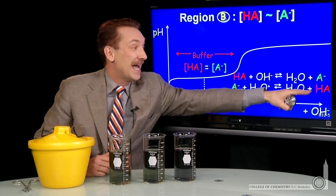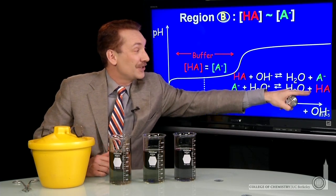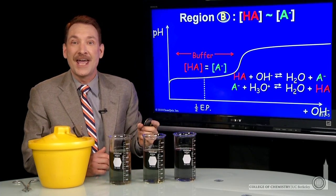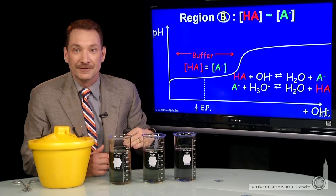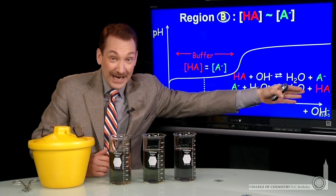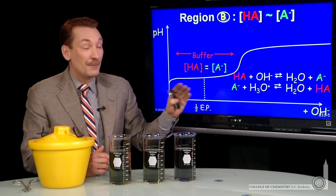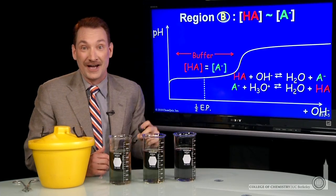For instance, acetic acid—if that were our acid—this reaction going in this direction would have a K of around 10⁻⁵. That means going back in this direction, we'd have 1 over that, something like 10⁺⁵.